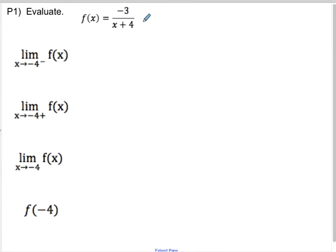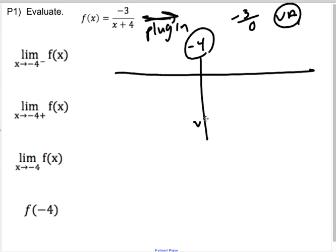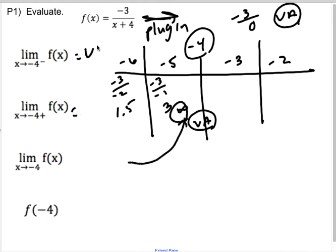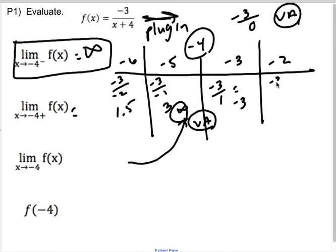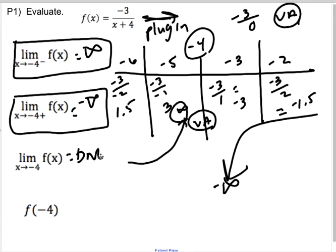For P1, if I plug in x = −4, I get −3 over zero, which tells me I have a vertical asymptote at x = −4. I'll pick −5 and −6 on the left side, and −3 and −2 on the right. Plugging in −6: −3/(−2) = 1.5. Plugging in −5: −3/(−1) = 3. Values are clearly getting larger approaching from the left, so the left-sided limit is positive infinity. Plugging in −3: −3/1 = −3. Plugging in −2: −3/2 = −1.5. These values are getting lower as I approach, so the right-sided limit is negative infinity. The double-sided limit does not exist, and the function is undefined.